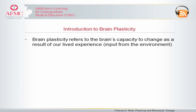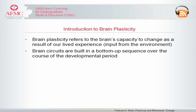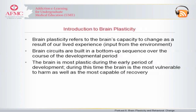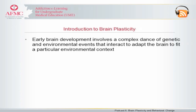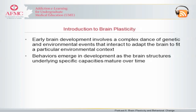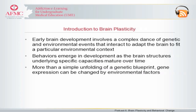What do we mean by brain plasticity? Brain plasticity refers to the brain's capacity to change as a result of our lived experience, or in other words, from input from the environment. Brain circuits are built in a bottom-up sequence over the course of the developmental period. The brain is most plastic during early development, meaning it is most vulnerable to harm as well as most capable of recovery. As brain circuits stabilize as we grow older, they become increasingly difficult to alter. Early brain development involves a complex dance of genetic and environmental events that interact to adapt the brain to fit a particular environmental context.